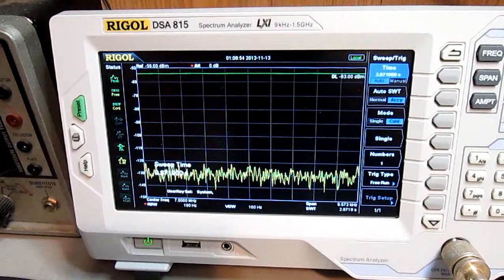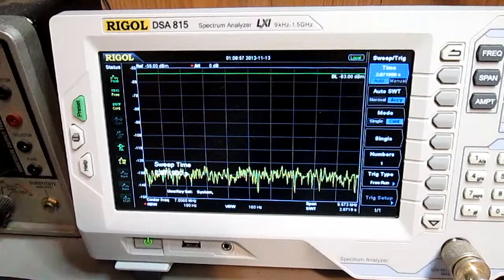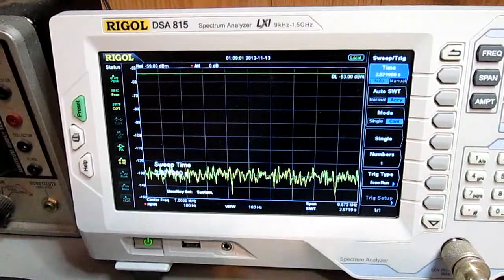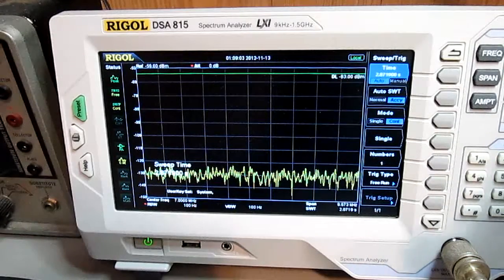So one thing we can do is set the trace to video averaging and help remove some of the noise so that you might be able to see that really low level weak signal.